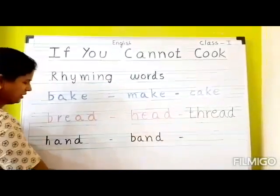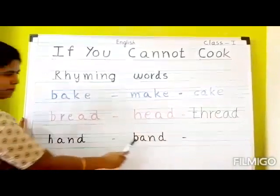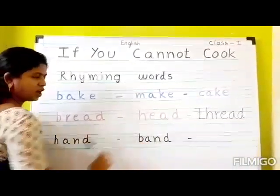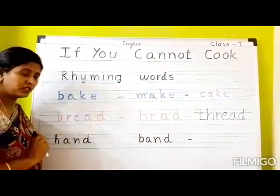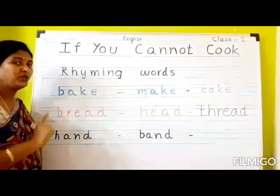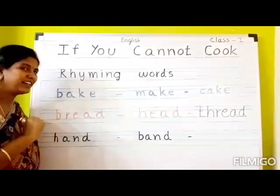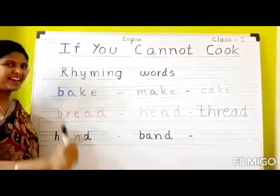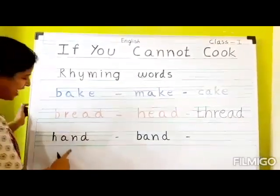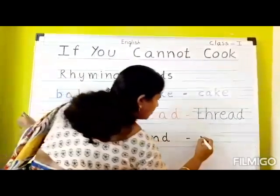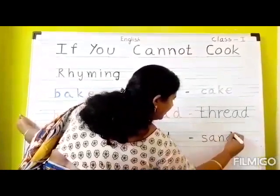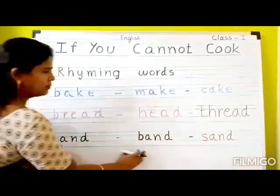Now the next words: hand, band. Can you tell me the next rhyming word? Here's a clue — when you go to the beach, you like to play in it. What is that? Sand! Hand, band, sand. The spelling of sand is S-A-N-D. Hand, band, sand.